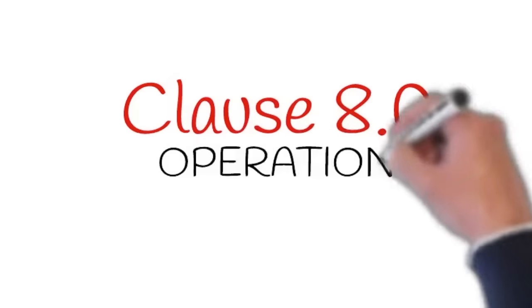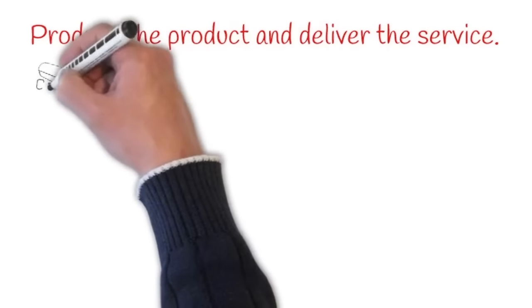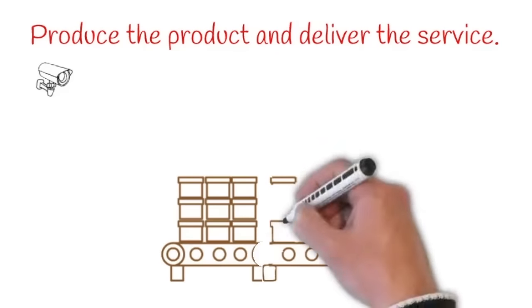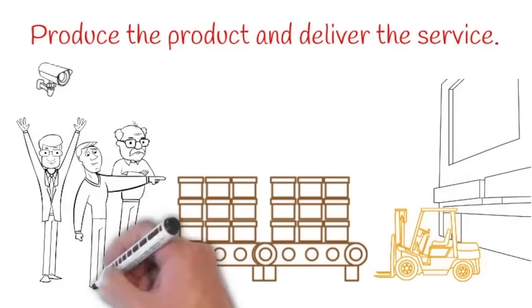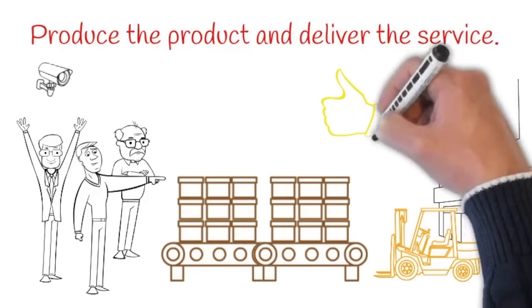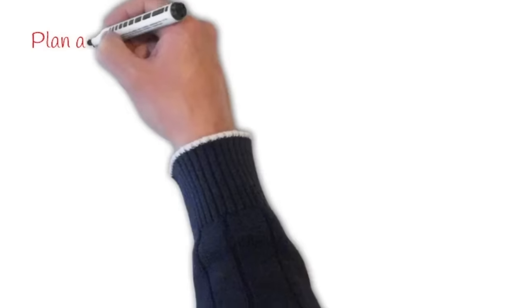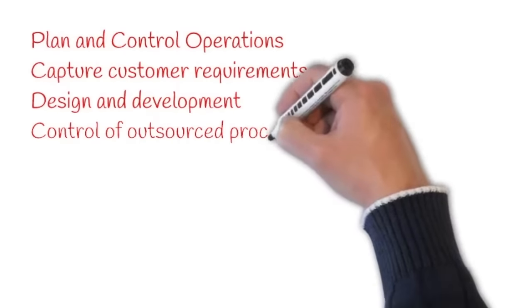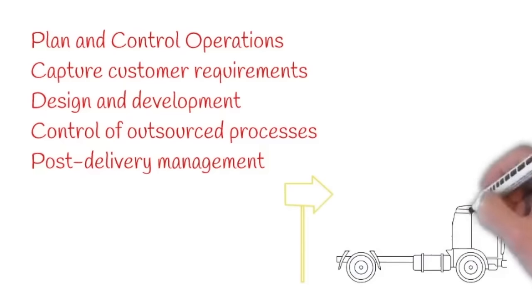In layman's terms, operation is all about getting things done. This is where you actually produce the product or deliver the service. Considered as one of the most challenging parts in every business organization, this is the part where you have to constantly keep your eyes open. Most of the management controls are also established in operation. After all, the quality of the results will depend on the quality of controls. Clause 8 will guide us on how to plan and control operations, capture customer requirements accurately, design and develop products and services, control outsourced processes, and manage post-delivery activities.